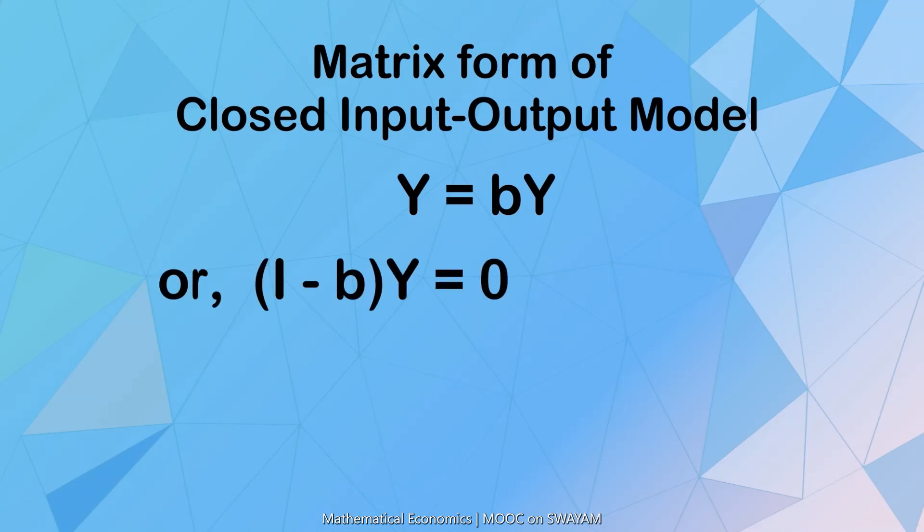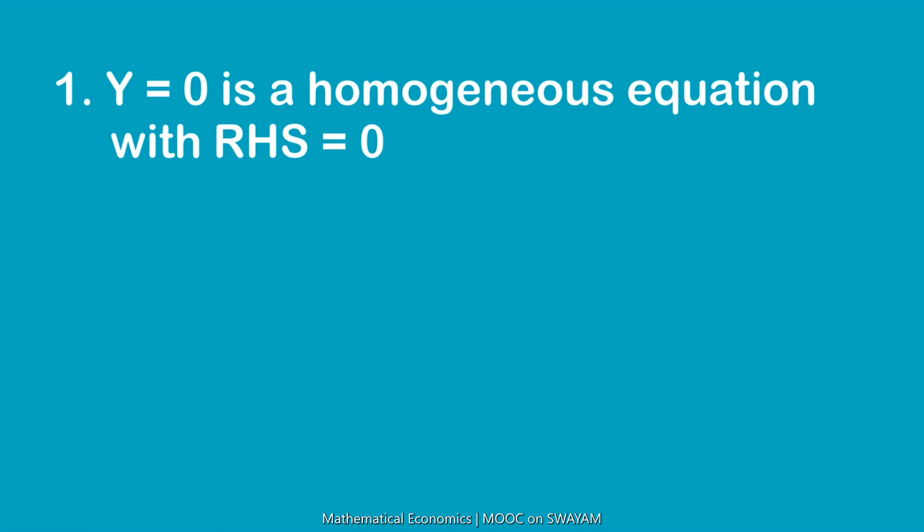Simplifying, we get Y minus bY equals 0, or I minus b into Y equals 0. Note that I minus b inverse may not be equal to 0. Therefore, Y equal to 0 does not mean that outputs will be 0.